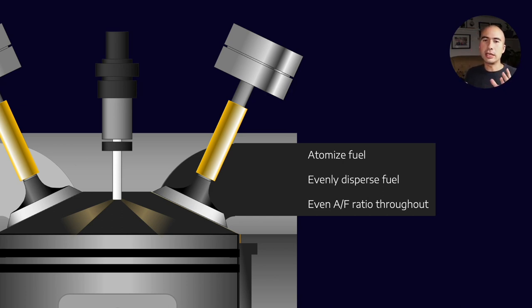In an ideal scenario, if you looked at any part of the combustion chamber, the air to fuel ratio would be exactly the same. In practice, we get localized pockets with varying fuel concentrations because no diesel injector can be perfect.